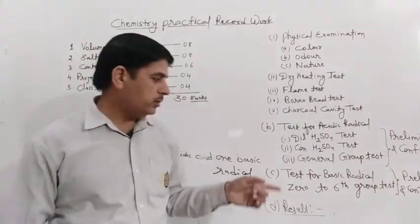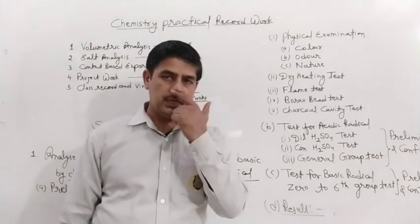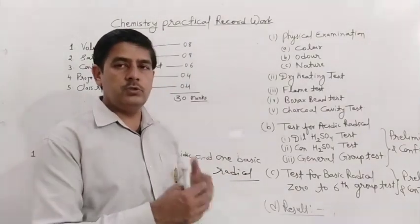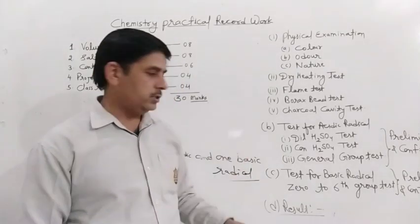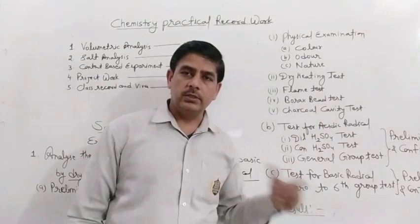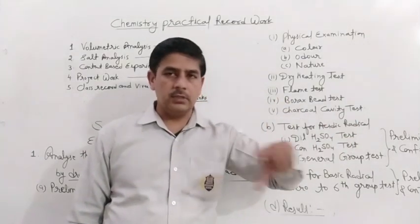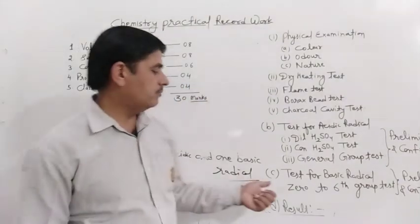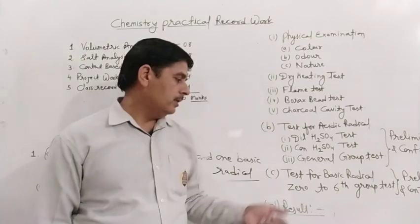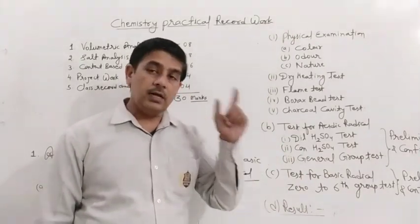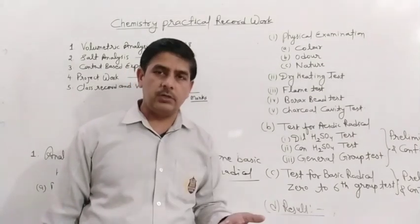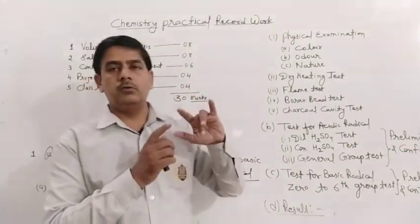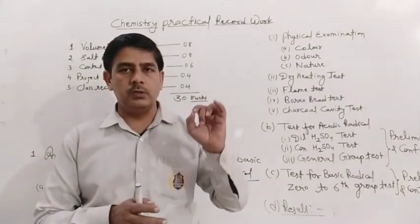After writing the acidic radical you have to write the basic radical. Basic radicals are the positive ions. In the test of positive ions, there are some preliminary tests performed using special group reagents. There are groups 0 to 6 in salt analysis — basically 7 groups if we include group 0 — and the basic radicals are divided into these 6 groups. First we will write down the group test, and after writing the group test we will write the confirmatory test. At least two confirmatory tests should be there. When you are sure that you have confirmed one acidic radical and one basic radical, you will write the result.